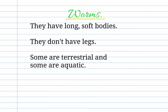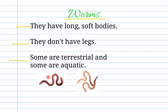Worms. They have long, soft bodies. They don't have legs. Some are terrestrial and some are aquatic. I am giving you some examples too. Here you are two different types of worms. Oh wait, these are not real — but they are delicious, aren't they?